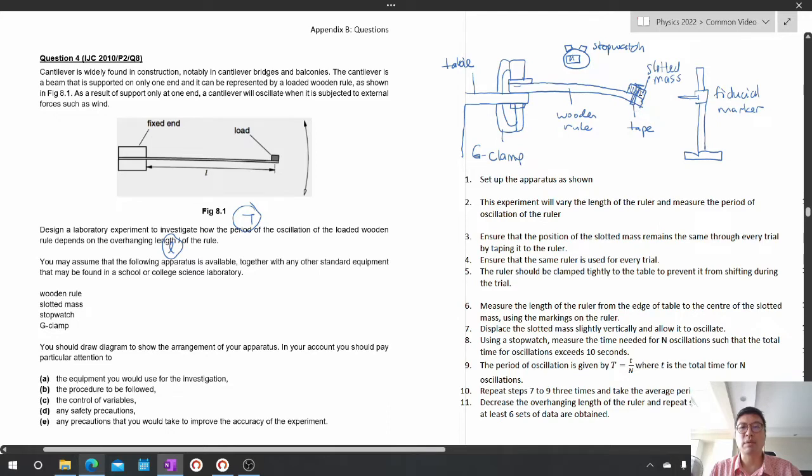Interestingly I've drawn the ruler a bit bent. I've drawn a little stopwatch to remind myself that I should use a stopwatch to measure the time. And also I've drawn a little fiducial marker, a retort stand with a pin so that I can use it to judge the oscillation of the ruler.